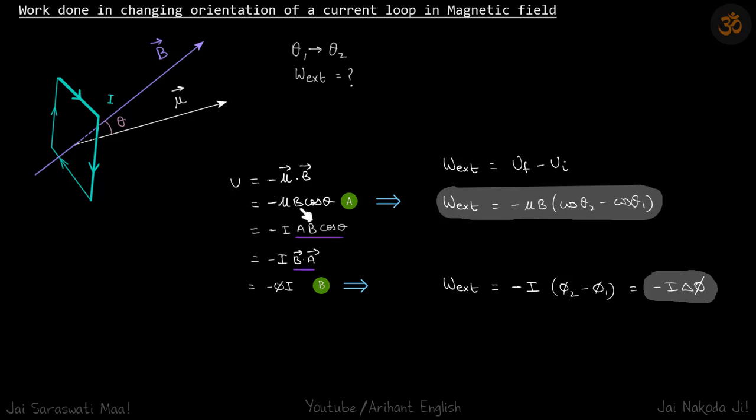Interaction energy can be written as minus mu B cos theta, and it can also be written as minus phi times i.